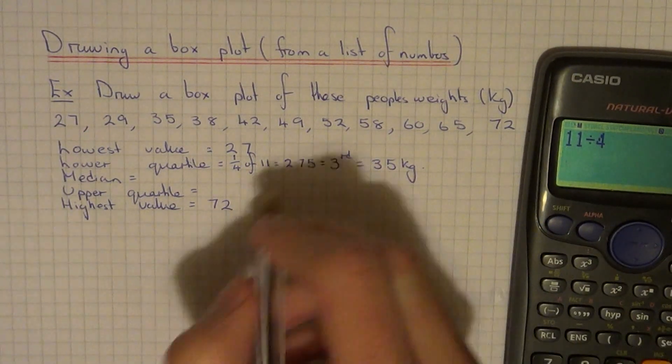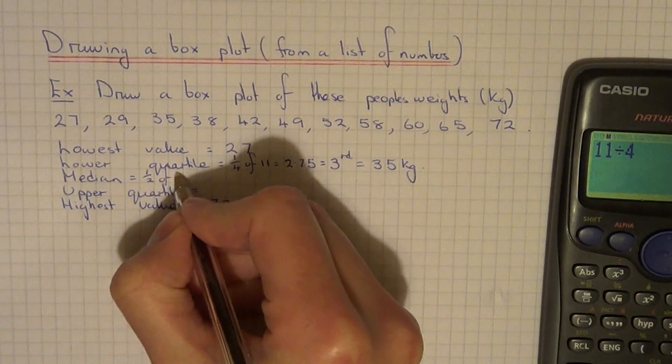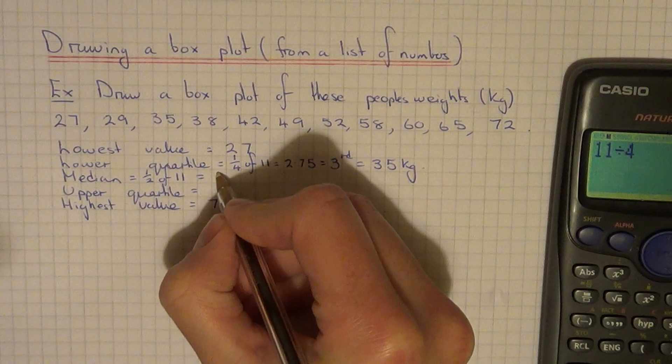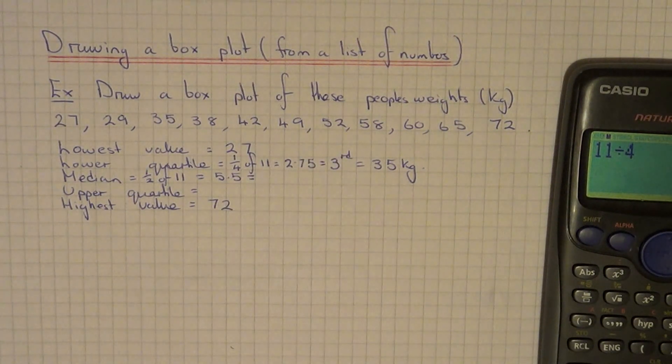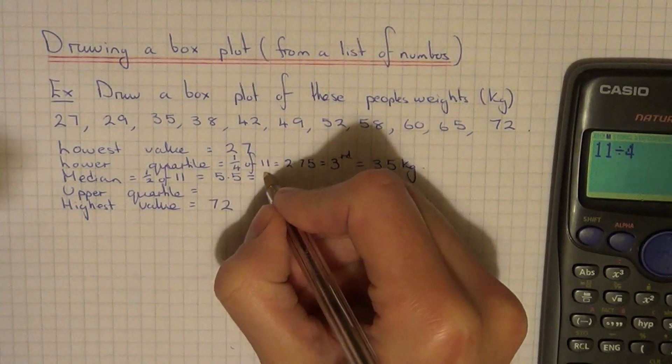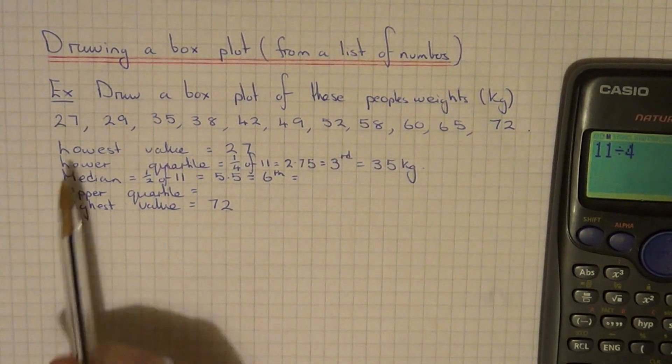Let's do the median. To find the median, we need to do half of 11 because the median is halfway through. Half of 11 is 5.5. Again we've got a decimal, so we need to round it upwards. That tells us the median occurs on the sixth person.